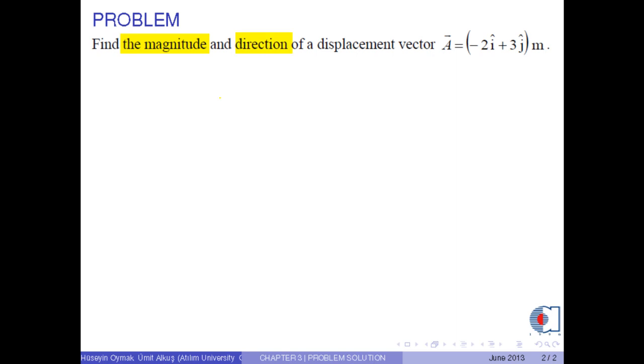Find the magnitude and direction of a displacement vector a equals minus 2 i-hat plus 3 j-hat meters.